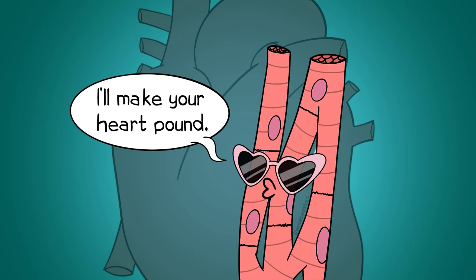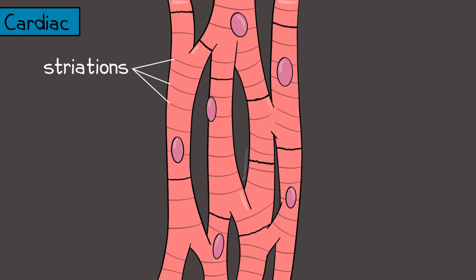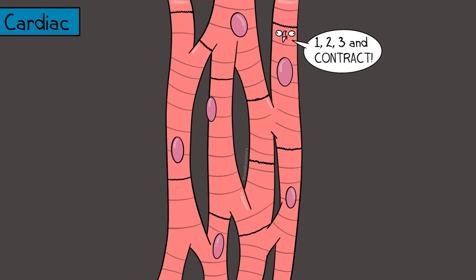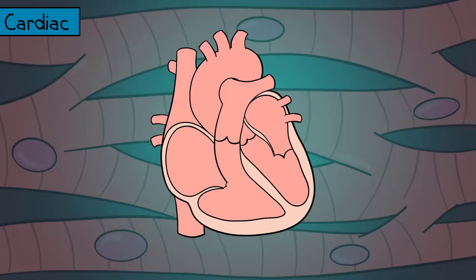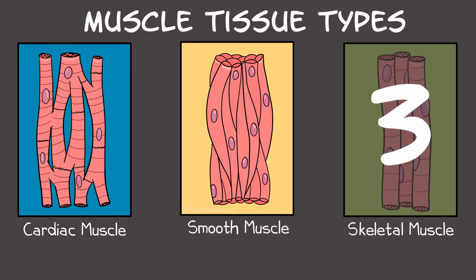Cardiac muscle tissue. Like its name suggests, it's in the heart. The muscle fibers are branched and striated, or striped. Each fiber has a nucleus. At the ends of the fibers, you'll find something called intercalated discs. These are really important because they're involved in helping the cardiac muscle tissue contract in an organized, wave-like pattern. This muscle tissue control is involuntary — that is, you do not consciously control it.